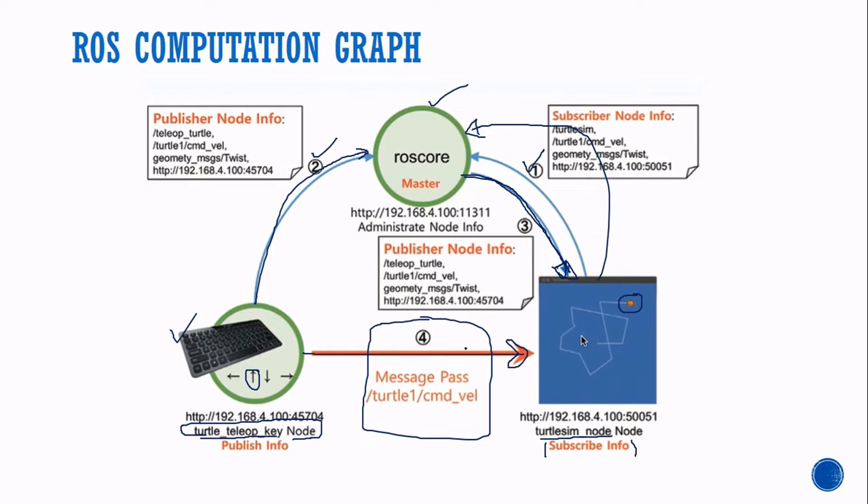In all these information boxes, you can check the publisher node info, the teleop turtle command, turtle command velocity, geometry messages, and IP addresses. This information is there because every time you create a node, it has its unique identity, and it has its own list of topics, nodes, etc.